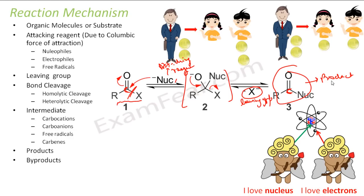Then we have byproducts — in this case there is no byproduct. And then we have the solvent; the whole reaction happens in some solvent, sometimes polar and sometimes non-polar. We will talk about solvents also. The two types of solvents we'll talk about are protic and aprotic.